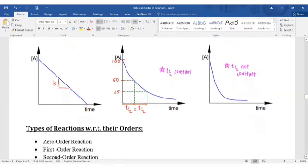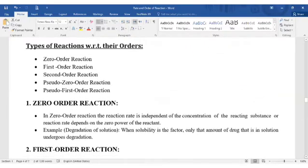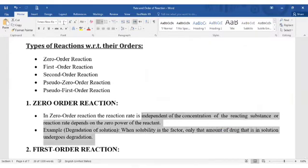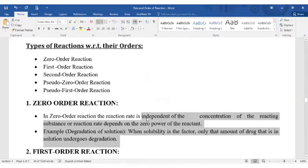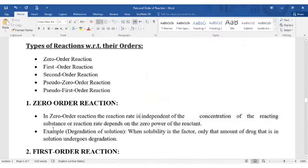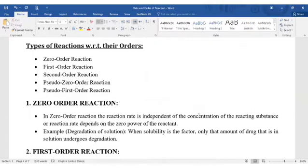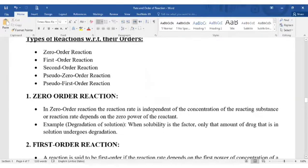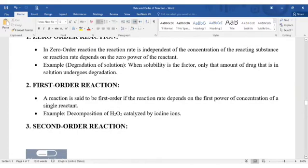So types of reactions with respect to their orders are zero order reaction, first order reaction, and second order reaction. In zero order reaction, rate is independent of the concentration of reacting substances. Example is degradation in suspension. So when solubility is affected, only the amount of drug that is in solution undergoes degradation.